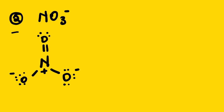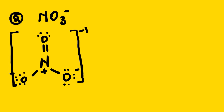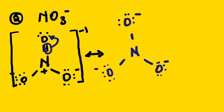Now looking at a resonance structure for this, I'm going to do this step by step so that you understand. What will happen is that one of the double bond electrons will flow to the oxygen, such that we are going to have something like this. The moment the double bond between this oxygen and nitrogen goes to oxygen, you can see that nitrogen now obeys the octet rule and then must have lone pairs.